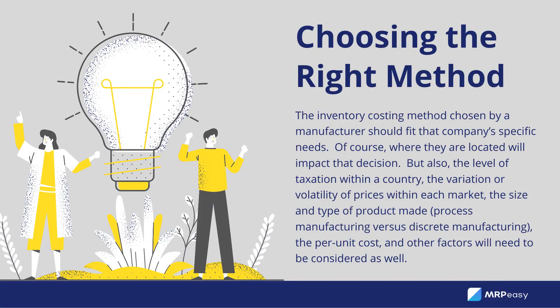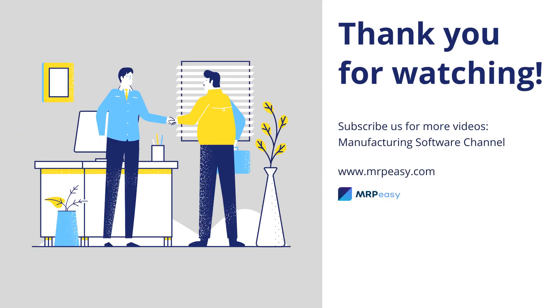The inventory costing method chosen by a manufacturer should fit that company's specific needs. Of course, where they are located will impact that decision. But also the level of taxation within a country, the variation or volatility of prices within each market, the size and type of product made — process manufacturing versus discrete manufacturing — the per-unit cost, and other factors will need to be considered as well.